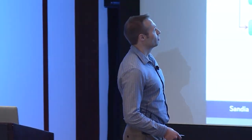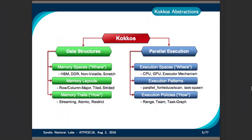The Kokkos Core library consists of abstractions for parallel execution. One category is the execution pattern — how is the execution to be structured? We have parallel_for, parallel_reduce, and parallel_scan. There are execution policies that allow users to express how the pattern should be executed — is this flattened parallelism, or are we going to use thread teams? There are execution spaces which allow users to express where the computation should be executed — on the host, on a CPU, on a KNL, on a GPU.